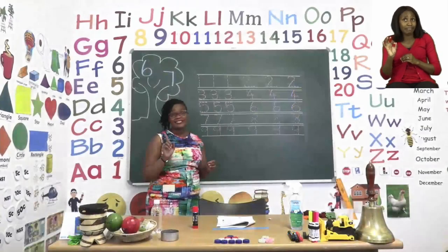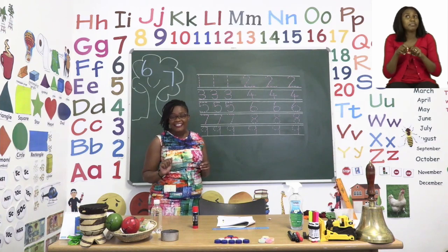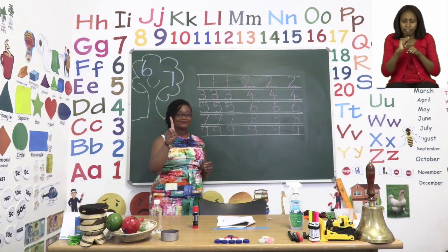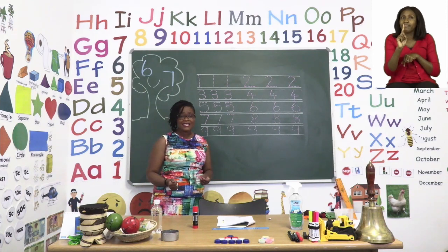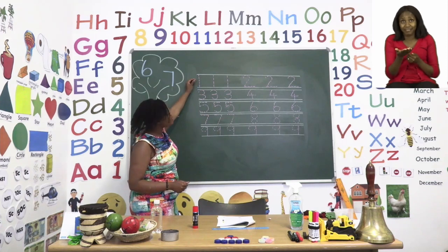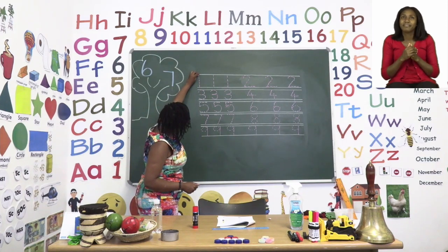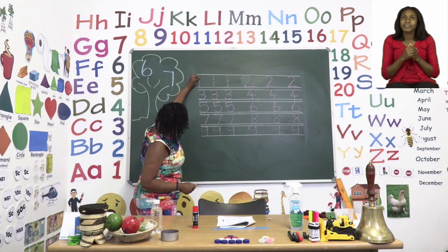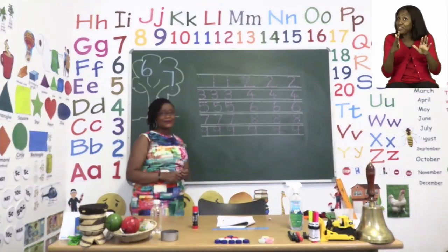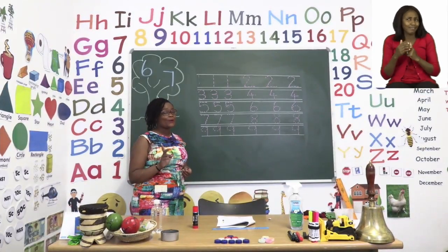Now, I have the same numbers you do in your book. We are going to start with the number one. Now, the number one is very easy to do. We start at the top line and we go down in a straight line going to the bottom line. Then we are done. There we go. So that is the number one.